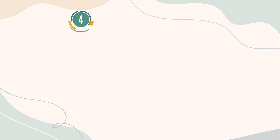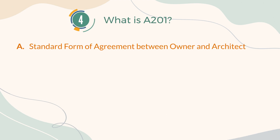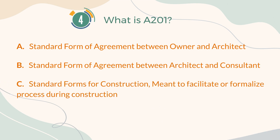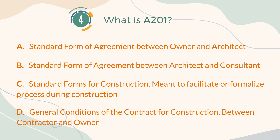Number 4. What is A-201? A. Standard form of agreement between owner and architect. B. Standard form of agreement between architect and consultant. C. Standard forms for construction, meant to facilitate or formalize process during construction. D. General conditions of the contract for construction, between contractor and owner.